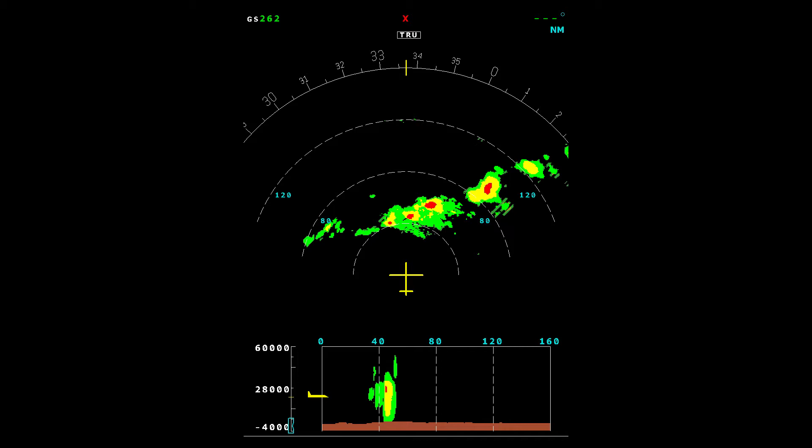In addition to the automatic weather detection mode, the RDR-4000 and RDR-7000 provide analysis modes to aid in making deviation decisions. Today, we're going to show you how to use constant altitude slices to analyze weather and make a deviation decision.